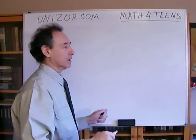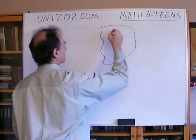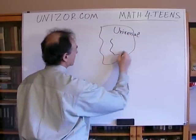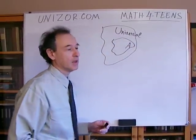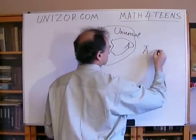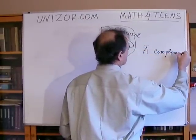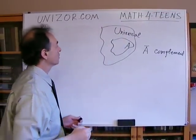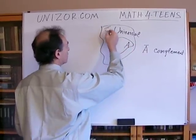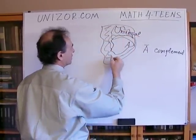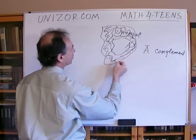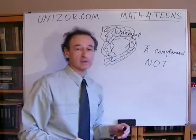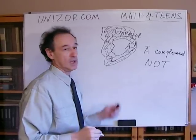Another concept is the concept of complement. If you have a big universal set U and some subset of this — let's call it A — there is a concept of a complement of A towards the universal set U which A belongs to. Basically, the complement is everything which does not belong to A, so it's the area around A. All these elements which do not belong to A are the complement. The word 'not' is very much associated with complement, because these are elements which do not belong to A.